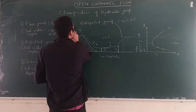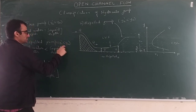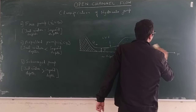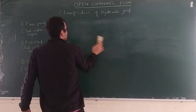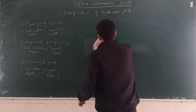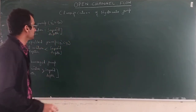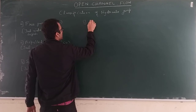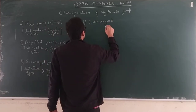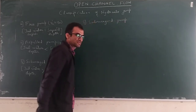For a repelled jump, the criteria is that the tail water depth Y2 dash is less than the sequent depth Y2. The third type of jump is the submerged jump, also called the drowned jump.